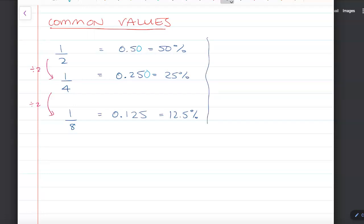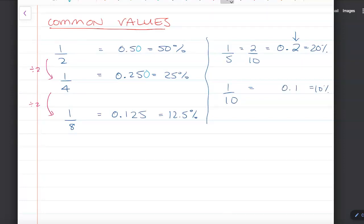Two similar ones are one fifth, which we can write as an equivalent fraction of two tenths, which is 0.2 or 20 percent. If we half 20 percent, we get 10 percent, which is 0.1 or 10 over 100. Knowing that one tenth is 0.1 or 10 percent is really key. Once you know 10 percent, you can find any percent.